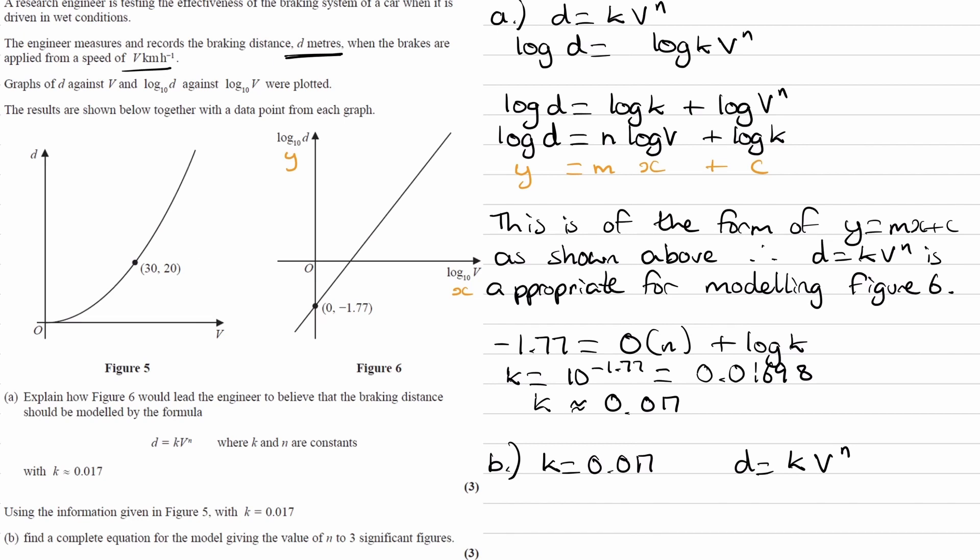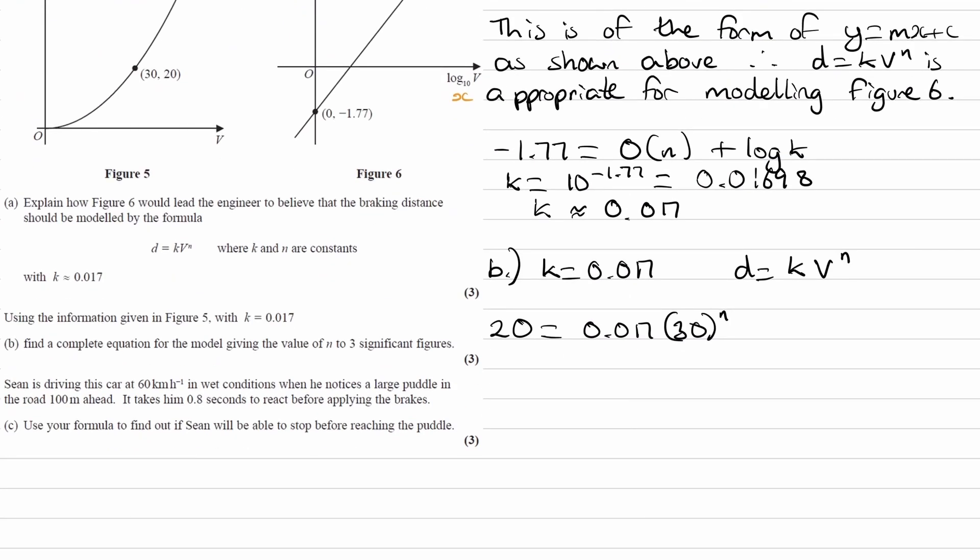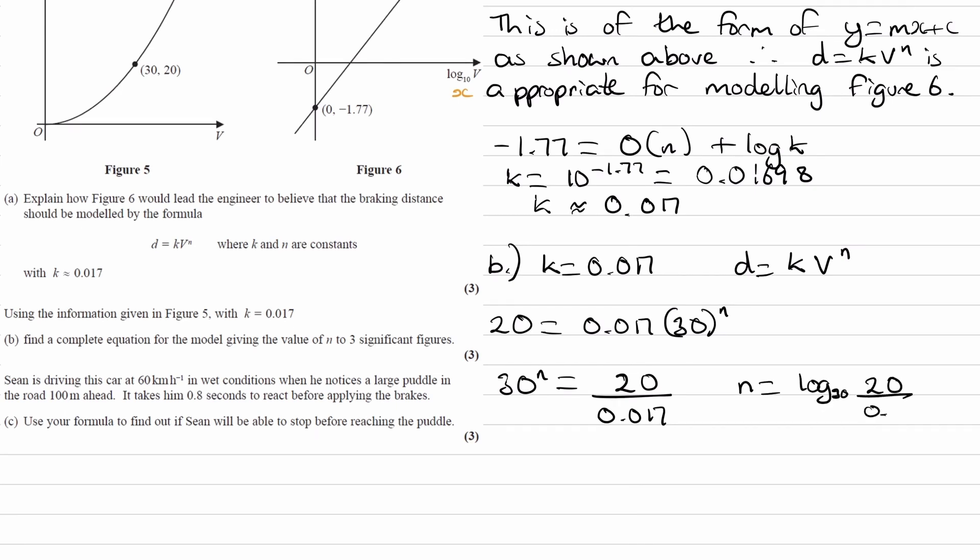So let's put those things in. We know that v equals 30 and d equals 20, so 20 equals 0.017 times 30 to the power of n. Now we're going to solve this for n. So we get 30 to the power of n equals 20 over 0.017, and then we want to do log to the base 30 of both sides to work out what n is.